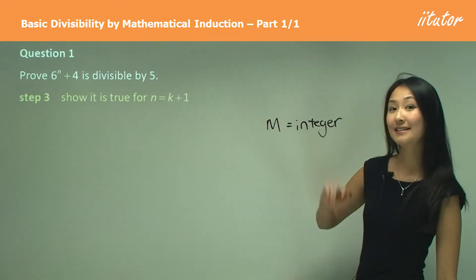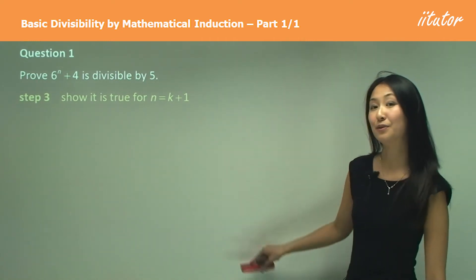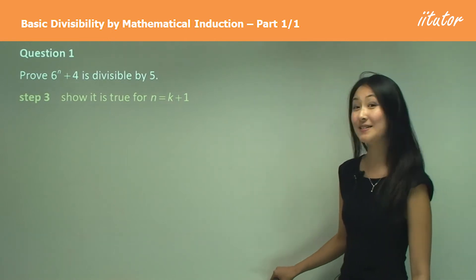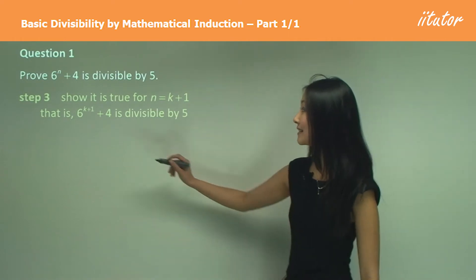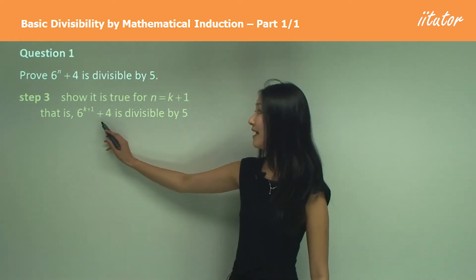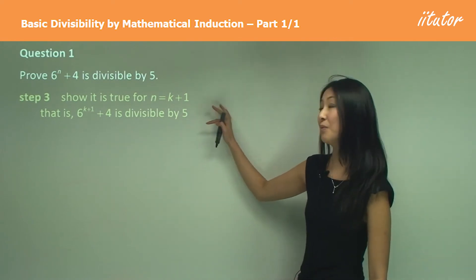Now in step three, we want to show that it is true for n equals k plus 1. So same as previously, and that is we write 6 to the power of k plus 1 plus 4 is divisible by 5. This is what we want to prove.